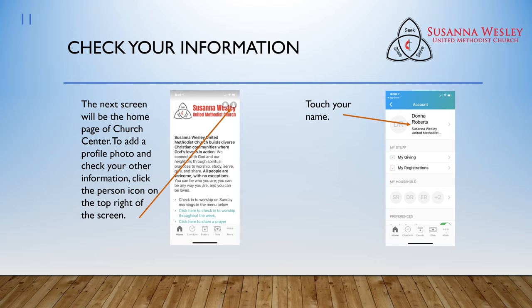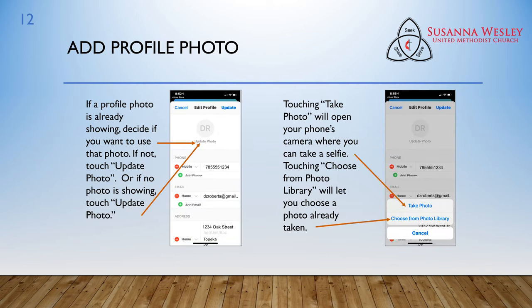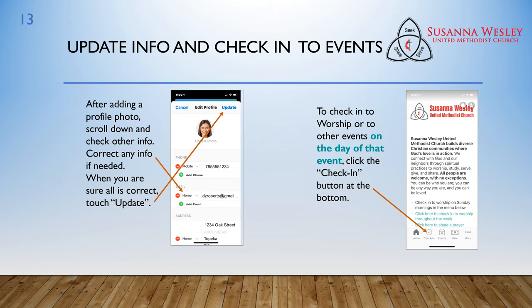The next screen will be the home page of Church Center. To add a profile photo and check your other information, click the Person icon on the top right of the screen. On the next screen, touch your name. If a profile photo is already showing, decide if you want to use that photo. If not, touch Update Photo. Or, if no photo is showing and you want one to, touch Update Photo. Touching Take Photo will open your phone's camera where you can take a selfie. Touching Choose From Photo Library will let you choose a photo already taken. After adding a profile photo, scroll down and check other info. Correct any info if needed. When you're sure all is correct, touch Update.